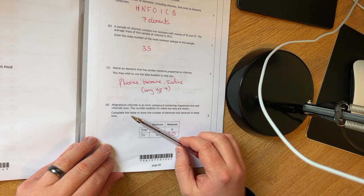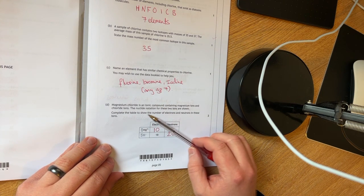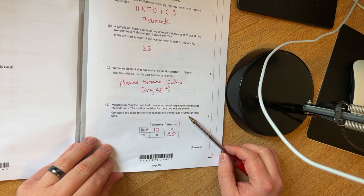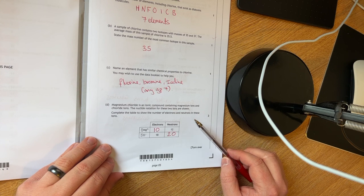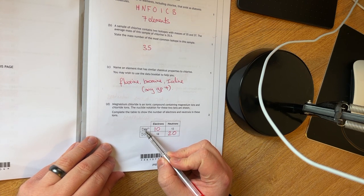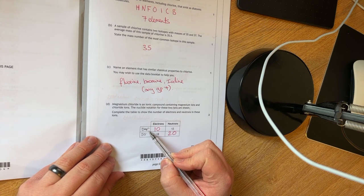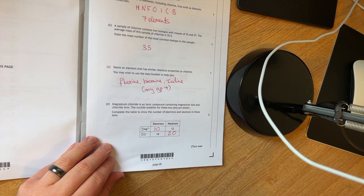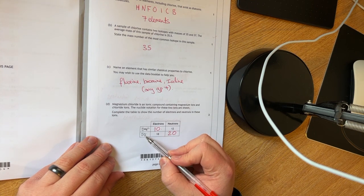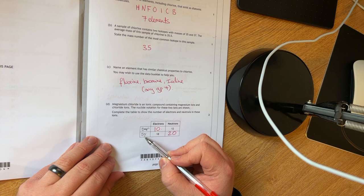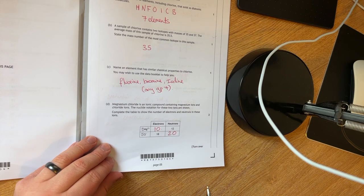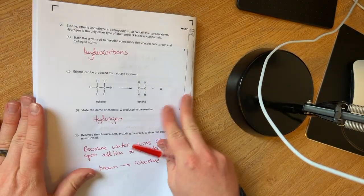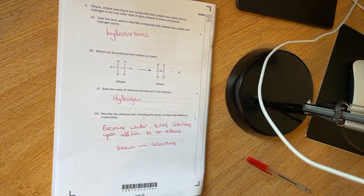Your magnesium chloride is an ionic compound containing magnesium ions and chloride ions. You have to complete the table to show the number of electrons and neutrons in these ions. We have 24,12 Mg 2+, that has lost two electrons. So it's got 10. And for this one here, your number of neutrons is the mass number take away the atomic number, which is 20.